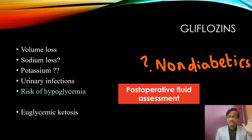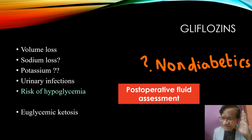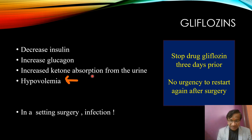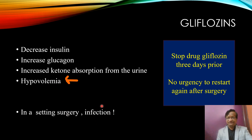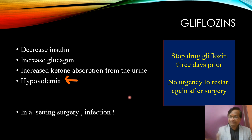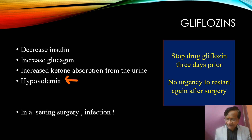Perioperatively, preoperative and intraoperative fluid assessment is difficult in patients on Gliflozins because they are already in a hypovolemic state. They are also prone to euglycemic ketoacidosis, as the drug decreases insulin, increases ketone bodies, and causes hypovolemia. In the setting of surgery, anesthesia, and infection, patients may develop ketosis even with blood sugars as low as 200 — not 400 or 500.